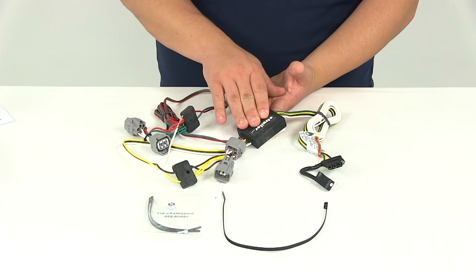I think that's going to do it for our review of part number 118496, the T1 vehicle wiring harness from TowReady.